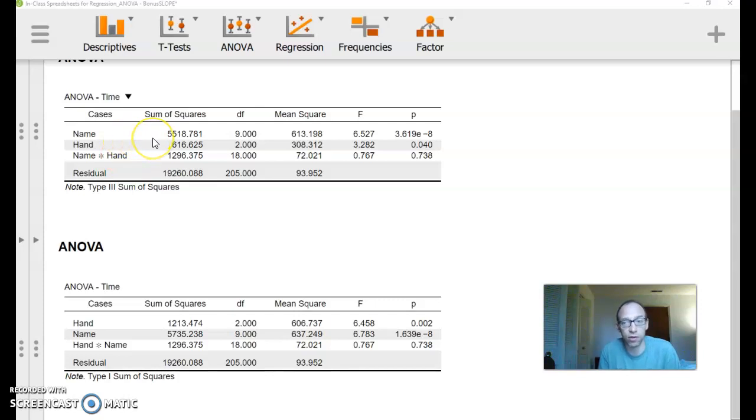Regardless of whatever else you put in the model, the residual sum of squares will change, but the total will stay the same, and the sum of squares for any main effect will stay the same. So hand here is 616. Here we see it's 1213.